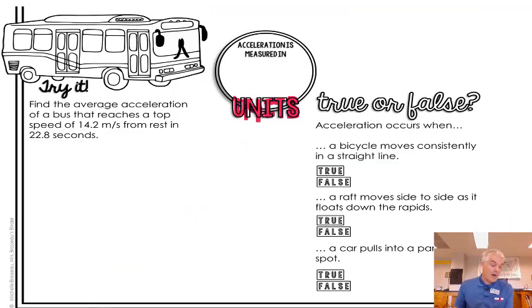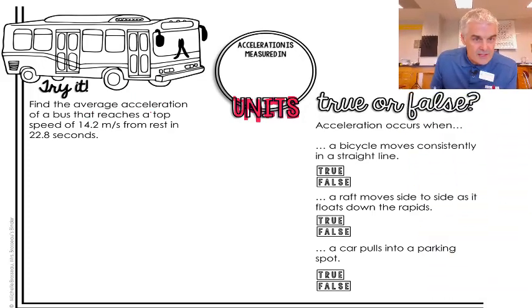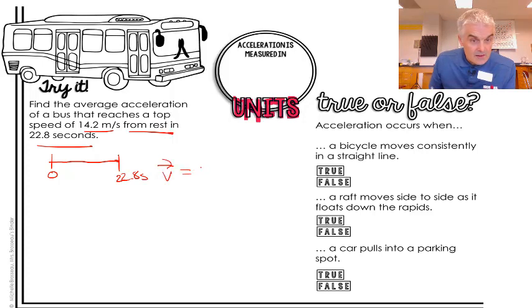So let's do a couple problems here. So we've got this situation. Try it! We've got the bus. Find the average acceleration of a bus that reaches a top speed of this many meters per second from rest in 22.8 seconds. So he started at rest, right? Let's draw a picture, right? He started at rest. This is here. Zero. And that at 22.8 seconds, he was traveling with a velocity equal to 14.2 meters per second. So his change in velocity went from zero to 14.2. So that's the change.